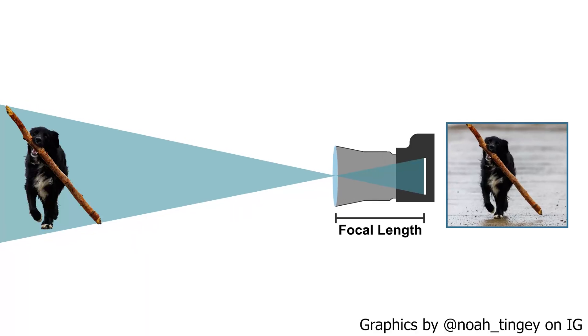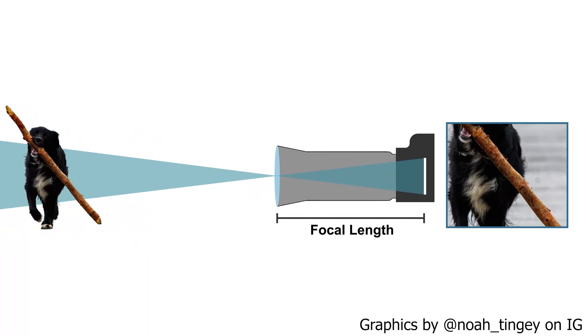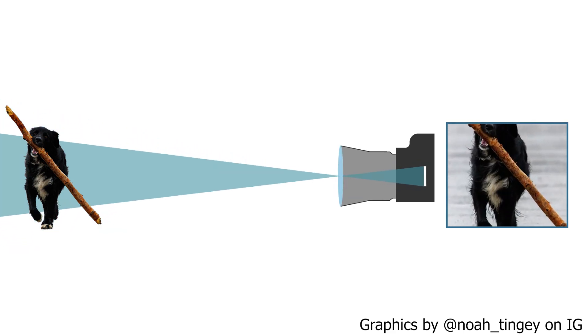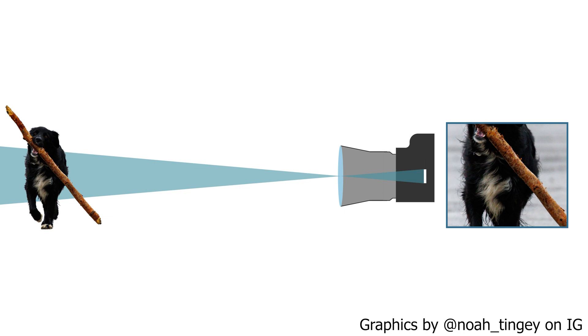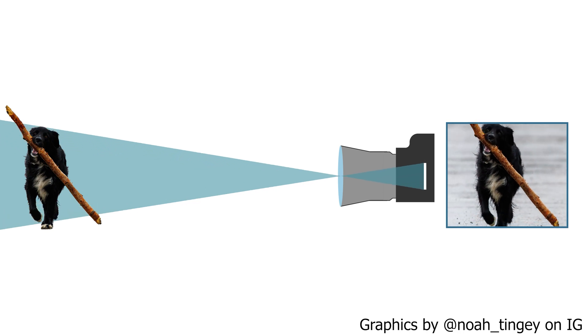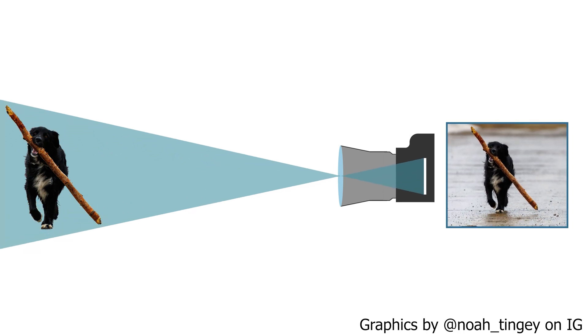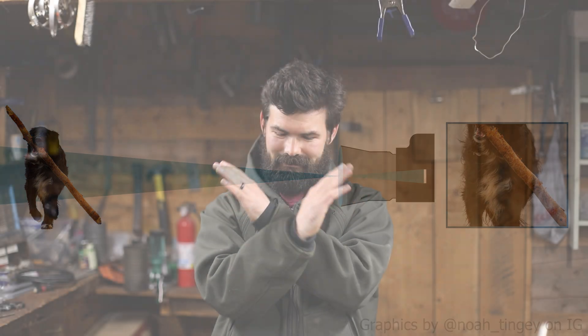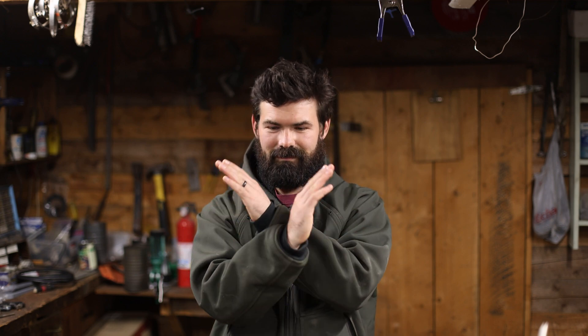Key to everything we're going to talk about in the rest of this video is the fact that field of view is determined by just two things: the focal length of your lens or telescope, and the size of your image sensor or piece of film. As your focal length increases, your field of view decreases. Conversely, as sensor size decreases, so does field of view. It's really important to notice that while the field of view is changing, the focal length is staying exactly the same.